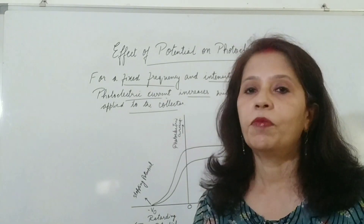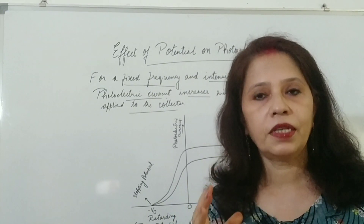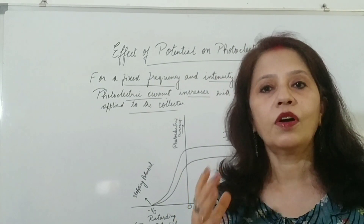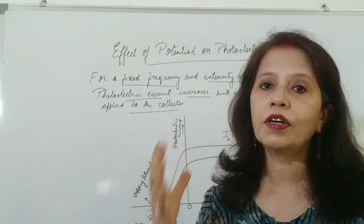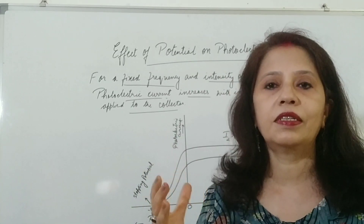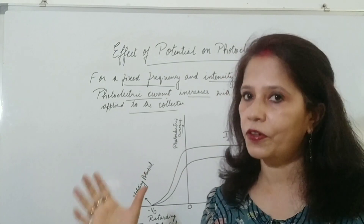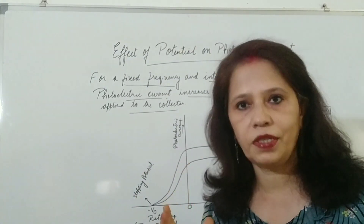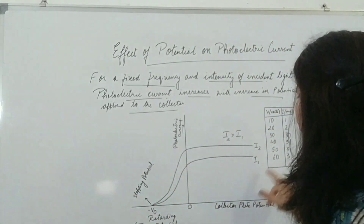Why does the current saturate? Because the emitter metal plate is not able to emit further electrons — it does not have the capacity to emit more. It has saturated.